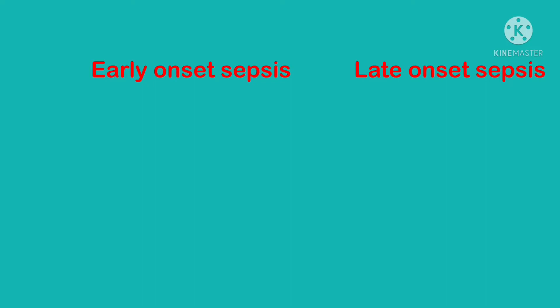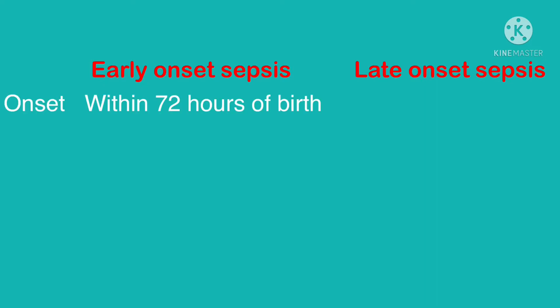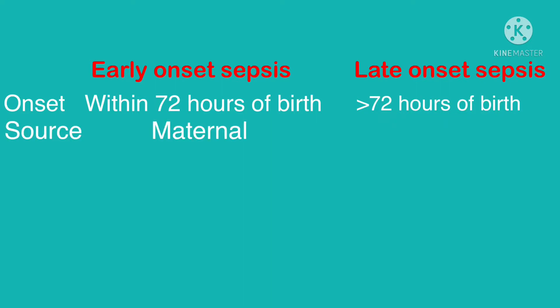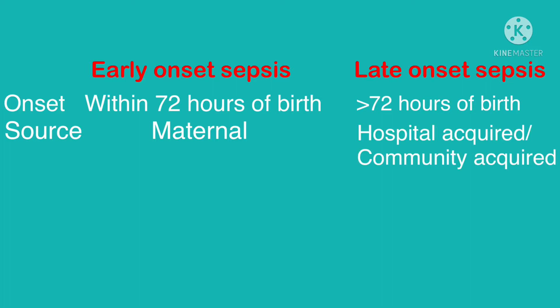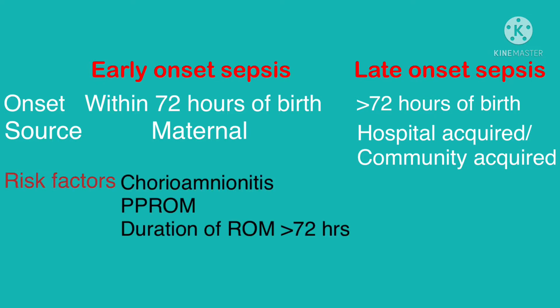On the basis of onset, we classify sepsis as early onset and late onset. Early onset sepsis occurs within 72 hours of birth, whereas late onset occurs after 72 hours. There are certain maternal sources associated with early onset sepsis, whereas late onset sepsis is acquired in hospital and community settings. Risk factors for early onset sepsis include chorioamnionitis, PPROM (preterm premature rupture of membranes), and prolonged rupture of membranes — more than 72 hours.